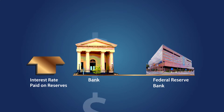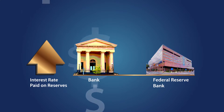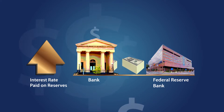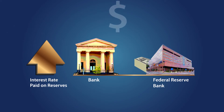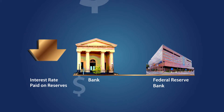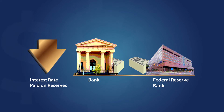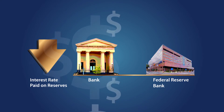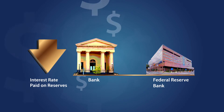By increasing the interest rate paid on reserves, the Fed can encourage financial institutions to put more of their reserves in their accounts at the Federal Reserve banks, so they have less money available to make loans to businesses and individuals. The opposite is true, too. Lowering the interest rate paid on reserves encourages financial institutions to reduce their balances at the Federal Reserve banks, and likely increase the amount they lend to consumers and businesses.